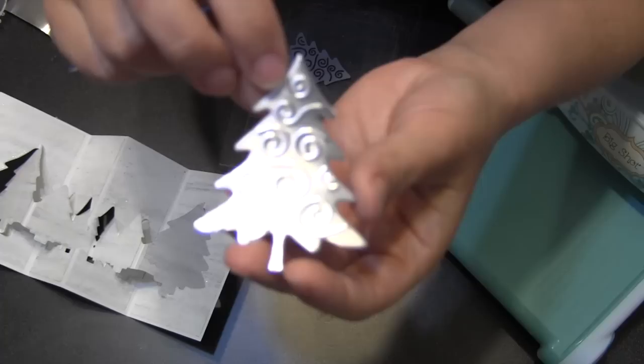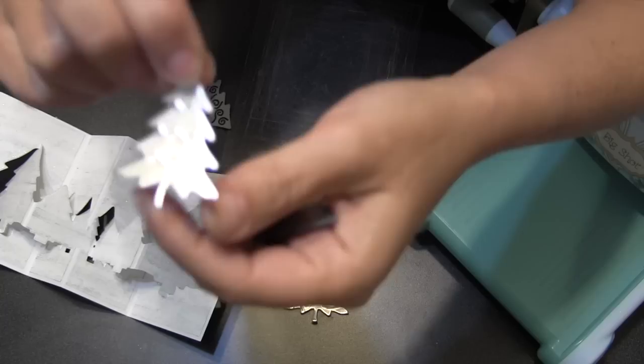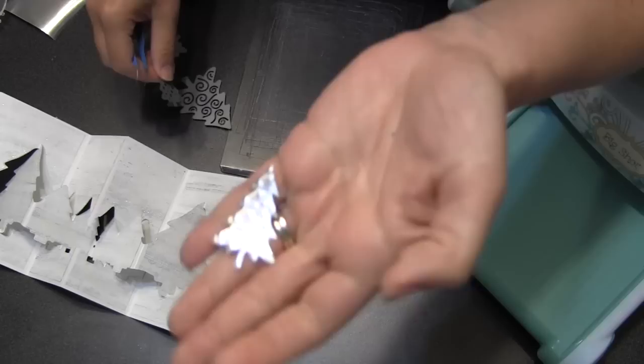The other two trees also have embossed features. The middle tree has these cool waves that go through the tree, and then the small tree has little polka dots.